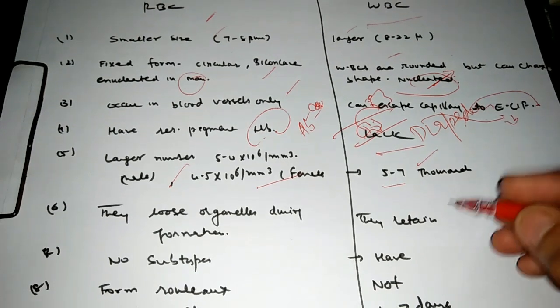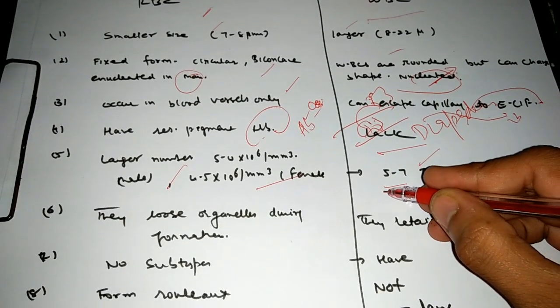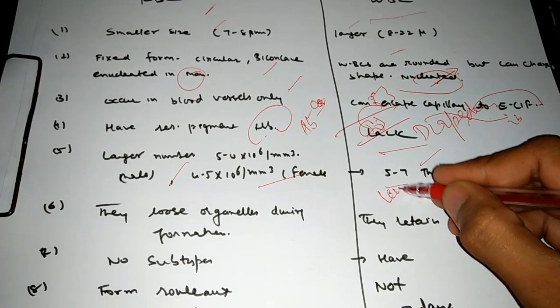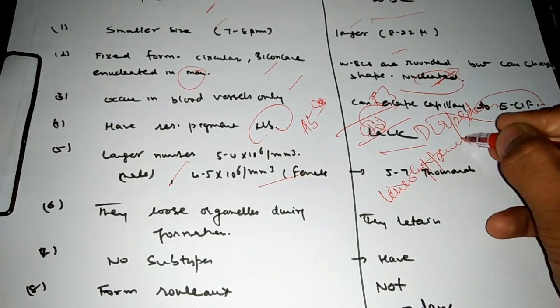Decrease in the WBC is called leukocytopenia and the large number of the RBC is called polycythemia.